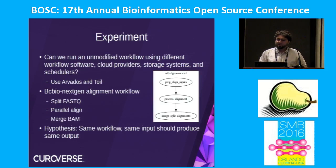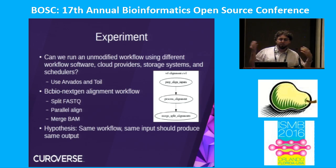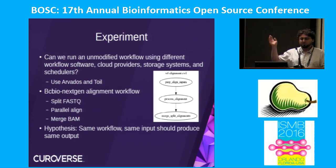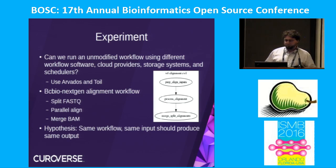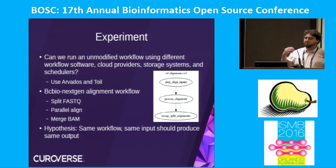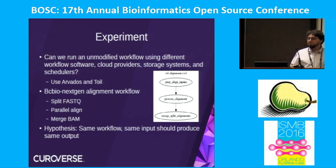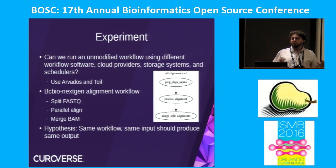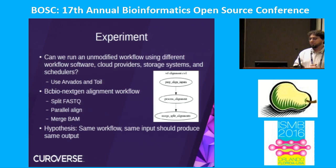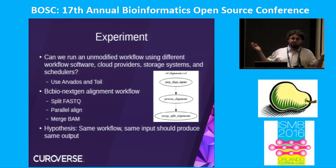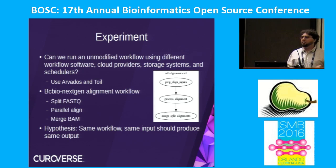Here's the experiment. It's actually a pretty small scale — I did this a few months ago as I'm developing all this software. The question we want to ask is: can we take this unmodified workflow and, using different workflow runners, different cloud providers, different storage systems, and different schedulers — a completely different software stack underneath the workflow — and get the exact same results? Given the same inputs, you would expect to get the same results. That's what computational reproducibility means, but that doesn't always happen in practice.